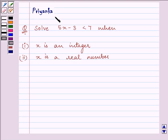Hi and welcome to the session. I am Priyanka and let us discuss the following question. Solve 5x minus 3 is less than 7 when x is an integer, and when x is a real number.